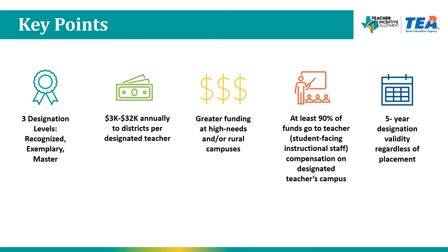Here are a few key points about how the Teacher Incentive Allotment works. TIA established three levels of designation: recognized, exemplary, and master. Designations are distinctions awarded to highly effective teachers. Districts that employ designated teachers will receive between $3,000 and $32,000 annually per designated teacher. The allotment is structured based on the campus of the designated teacher's employment, with greater funding issued for teachers working at high-needs or rural campuses.